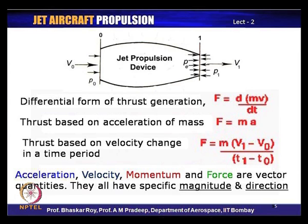d(mv)/dt means you must have continuous control over the momentum change of the working medium — which in our case is air. We need a continuous change in momentum of air through the propulsive system for thrust to be generated, and this must be done at every instant. At every instant, the momentum change will create a certain amount of thrust.